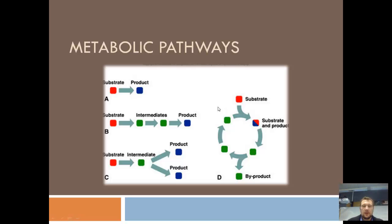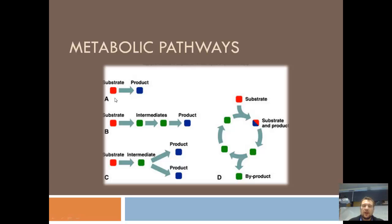We're going to be doing metabolic pathways in this particular PowerPoint. A metabolic pathway is a series of chemical reactions where you go from one chemical, a starting chemical, to a product that the organism needs. This type of chemical reaction is controlled by enzymes at every step. It can be very simple, where it's just one thing into another thing, or it can be a series of chemical reactions with a series of steps, each step being controlled by an enzyme.